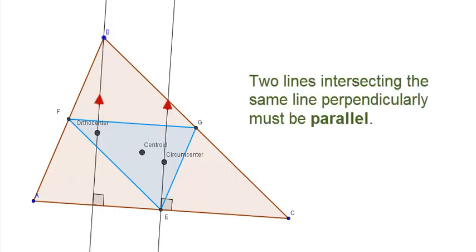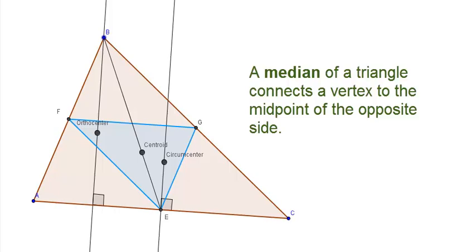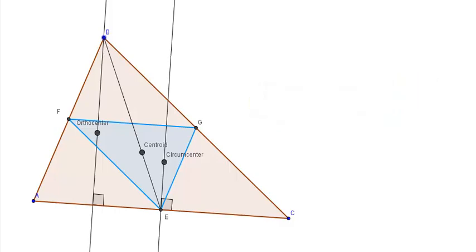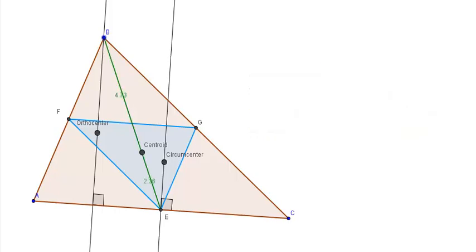Now we're going to construct segment BE, which is a median of the triangle because it connects the vertex of a triangle to its opposite midpoint. We can see how it passes through the centroid — and it should, because all medians intersect at the centroid. If we remember our properties about the centroid, it's always positioned two-thirds of the distance from the vertex to the midpoint of the opposite side. So these two segments are always in a 2 to 1 length ratio.